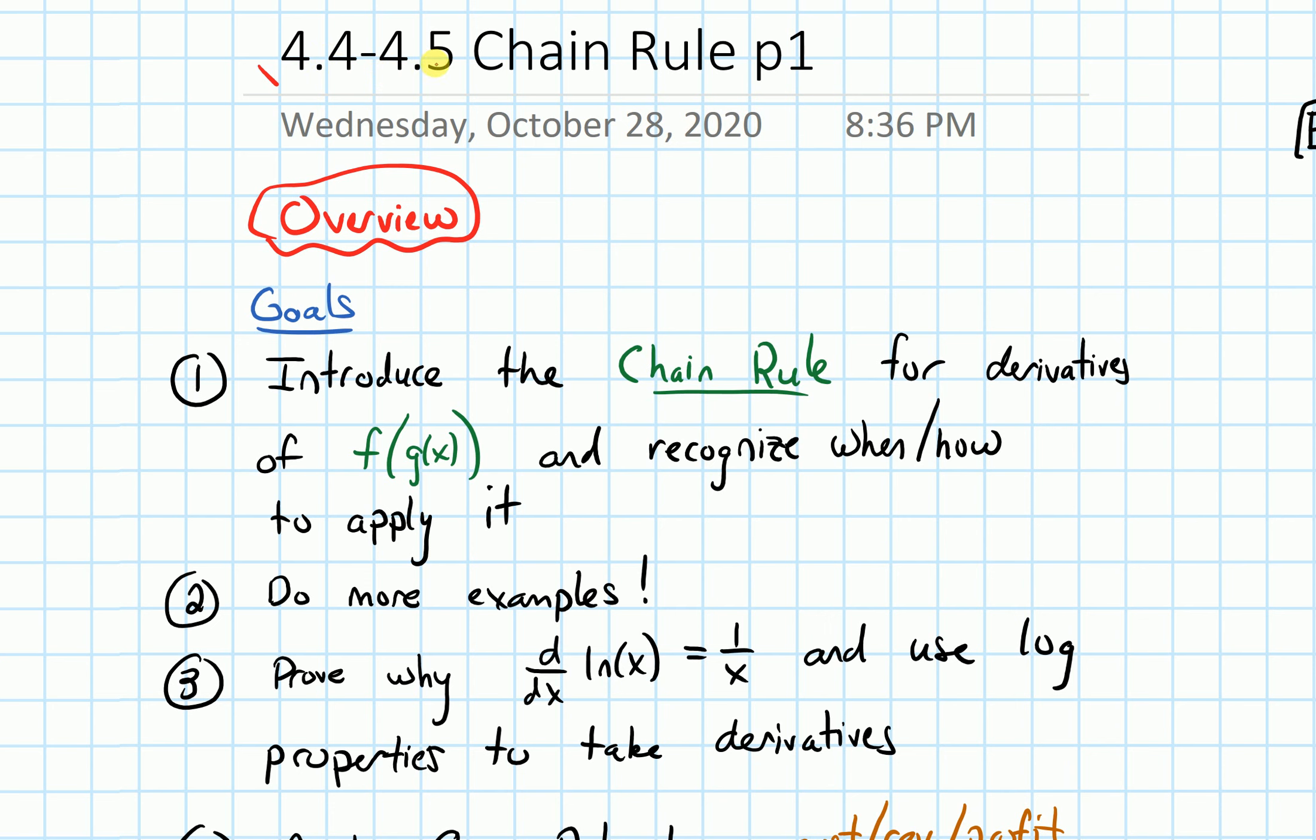In section 4.5, they talk about how to do derivatives of e to the x and ln of x, which we've already seen before. I introduced them back in section 4.3 on product and quotient rules. So we're going to combine some of that discussion from 4.5 into this section on chain rule.